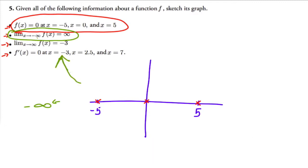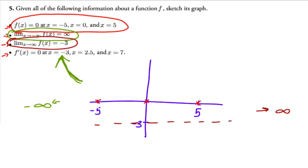The next condition says the limit as x approaches positive infinity equals negative three. So if negative three is here, my function should be approaching negative three on the right side. This means I have a horizontal asymptote there, so I'll draw the asymptote and once I know more I'll determine whether the function approaches from below or above.